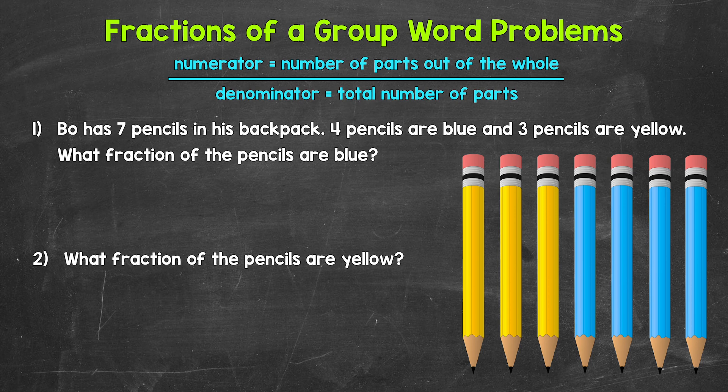Let's jump into number one: Bo has seven pencils in his backpack. Four pencils are blue and three pencils are yellow. What fraction of the pencils are blue? Let's start with the denominator — the total number of parts that make up the whole group. Bo has seven pencils in his backpack, so seven is our denominator.